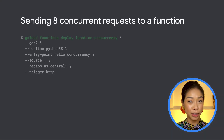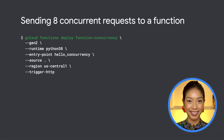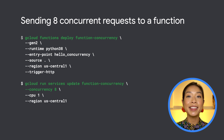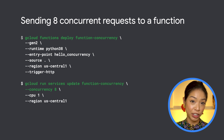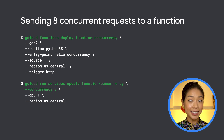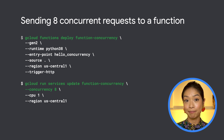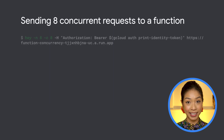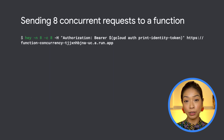Let's deploy a simple Python 3.8 function. Once deployed, we can utilize the underlying Cloud Run functionality and update the Cloud Function to handle more than one concurrent request at a time, which is the default of one. In this case, we'll set this value to 8. We can then use the hey utility to demonstrate how Cloud Functions handles concurrency.